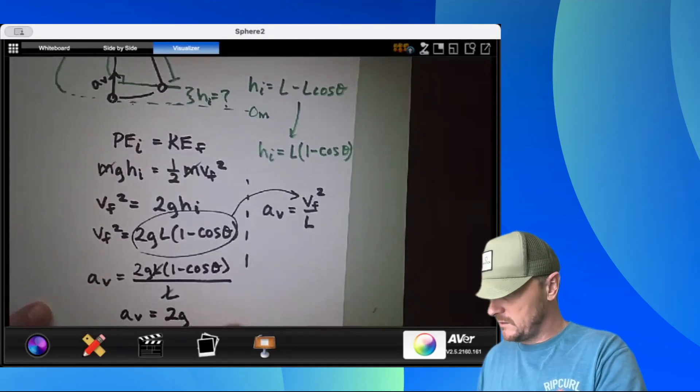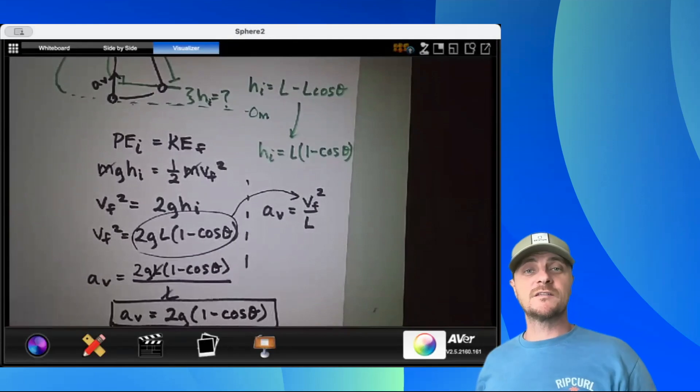AV equals 2G times 1 minus cosine theta. All right, just about done.